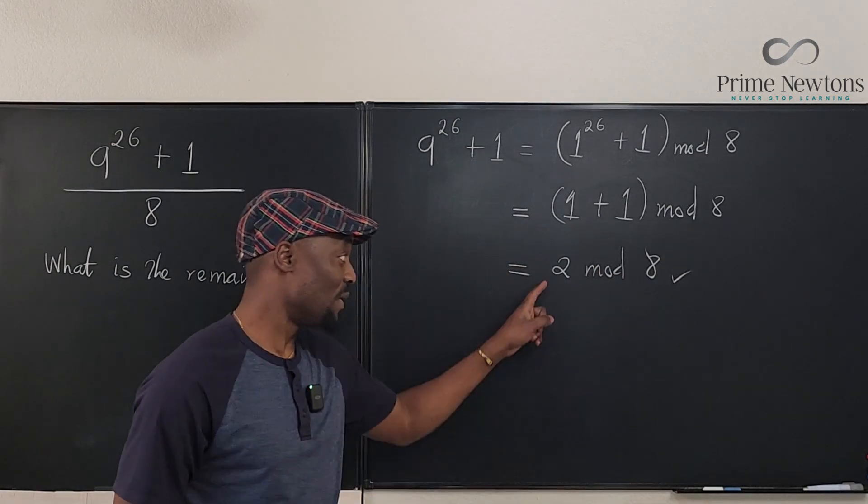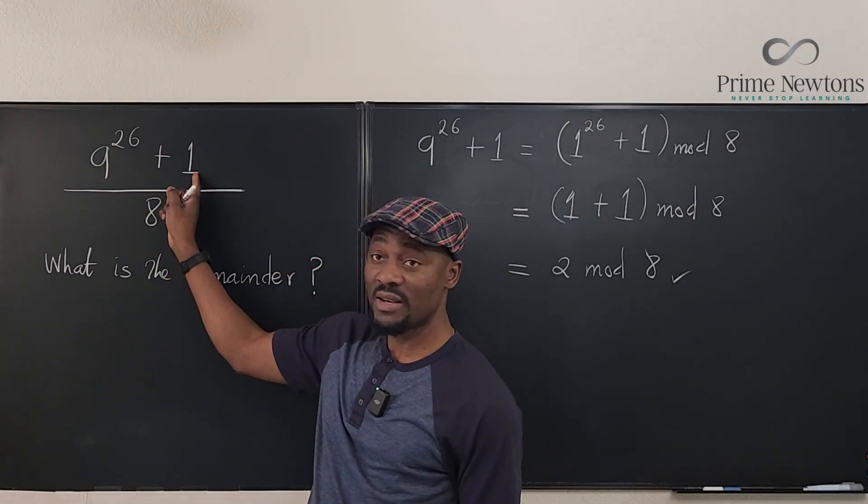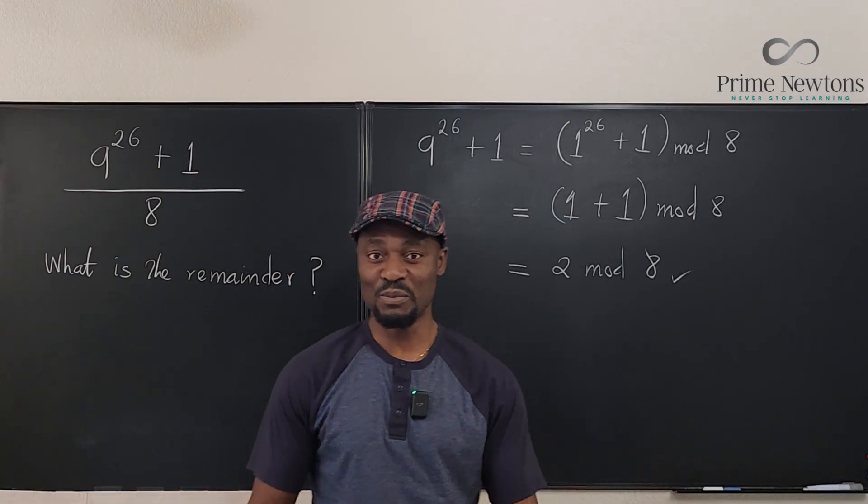That's it. So the remainder when this number plus 1 is divided by 8 will be 2.